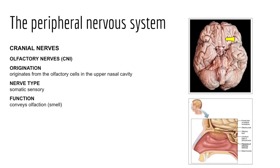Cranial nerve one is the olfactory nerve. This pair arises from olfactory receptor cells of the nasal cavity, passes through the cribriform plate of the ethmoid bone, and the fibers synapse to form olfactory bulbs, which terminate in the primary olfactory cortex in the inferior temporal lobe. The olfactory nerves are purely sensory, providing our sense of smell.